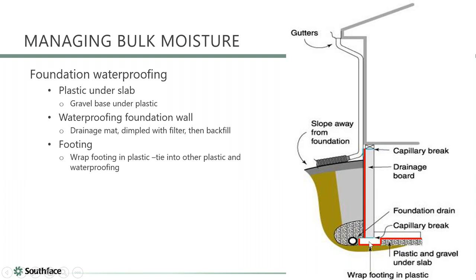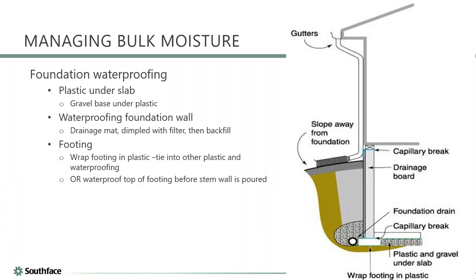To address the footing issue, either wrap the footing in plastic and tie that into the plastic under the slab and the waterproofing on the stem wall, making it a continuous watertight system — or waterproof the top of the footing after pouring, then tie the slab plastic and foundation wall waterproofing into that. This is a critical detail that's very hard to fix once the house is built.